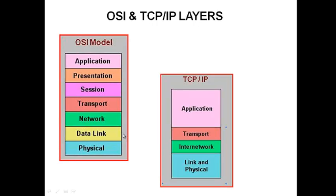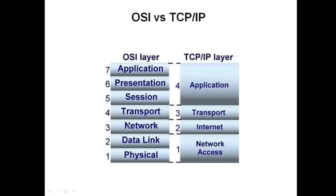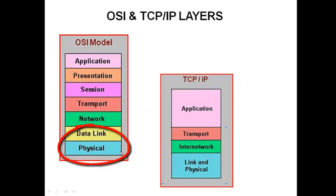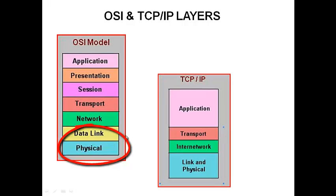Going up, we have the data link layer, also called the MAC address layer or Ethernet address layer. It determines the MAC address of any device on the network. Between the data link and physical layers, you have the LLC — Logical Link Control — and the MAC address. The lower half of the data link layer is the MAC address, and the upper half is the LLC.